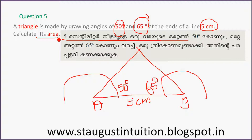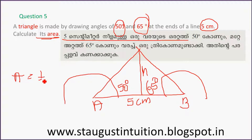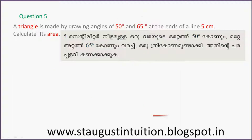Now we calculate the area. The area is of the triangle and the height is unknown. We know that Area is equal to half times B times H. Here B is 5 cm.